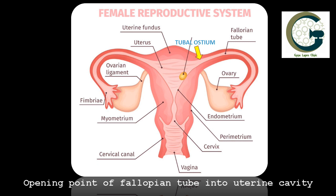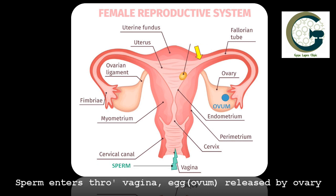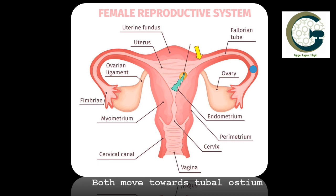Normally, during the process of intercourse, the sperm enters through the vagina and the egg or the ovum is released by the ovary. The ovum then travels through the fallopian tube and the sperm travels through the uterus until finally both of them meet inside the fallopian tube at a point somewhere close to the tubal ostium. Once these two have met, the pregnancy starts forming and in due course of time, this pregnancy finds its way back into the uterus as shown by the golden symbol called the embryo.